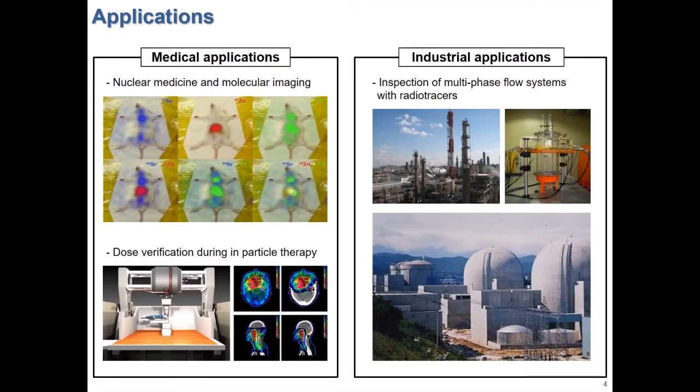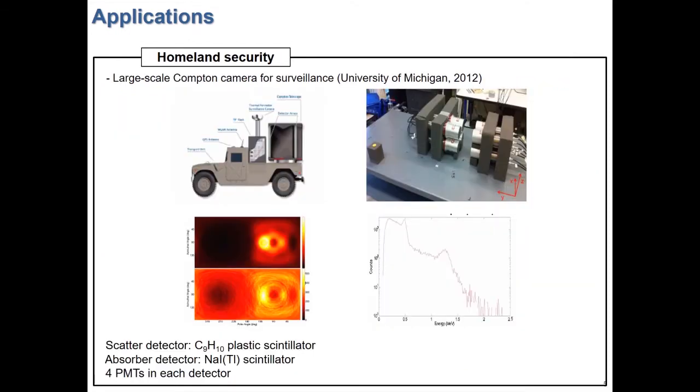Compton cameras can be used in many different fields, such as to monitor dose distribution in hadron therapy, to visualize radiation sources in nuclear facility decontamination, or to image fluid flow in large pipes. Also, the Compton cameras can be used for security purposes such as identification of a dirty bomb.